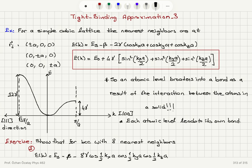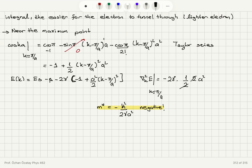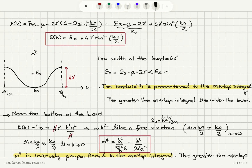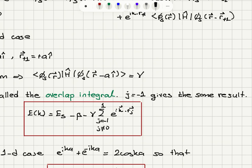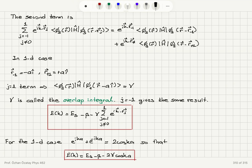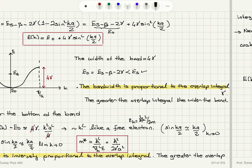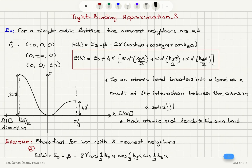If we remember our tight binding expression for the band structure, we have two versions: one is E0 plus 4γ sine-squared(Ka/2), and the other is Es minus β minus 2γ cosine(Ka). These all came from the summation of e^(ik·Rj) for j equals minus 1 and j equals plus 1.